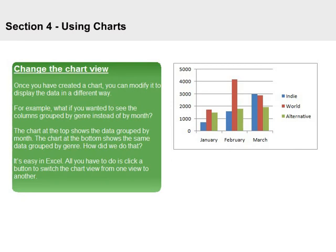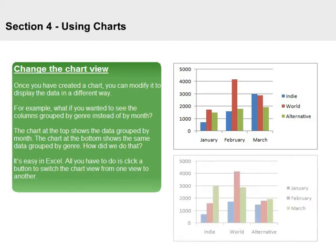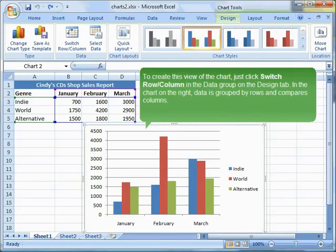Change the chart view. Once you have created a chart, you can modify it to display the data in a different way. For example, what if you wanted to see the columns grouped by genre instead of by month? The chart at the top shows the data grouped by month. The chart at the bottom shows the same data grouped by genre. It's easy in Excel — all you have to do is click a button to switch the chart view. To create this view of the chart, just click Switch Row/Column in the Data group on the Design tab.